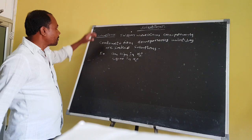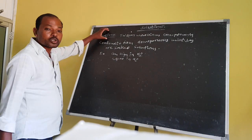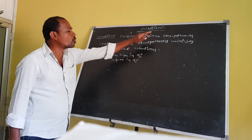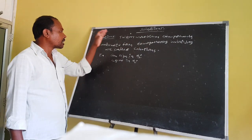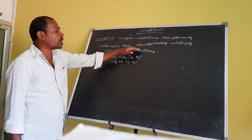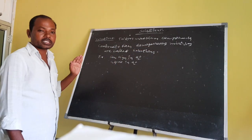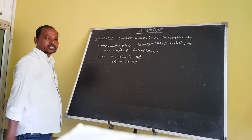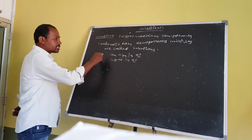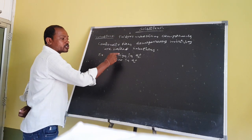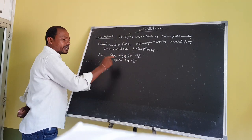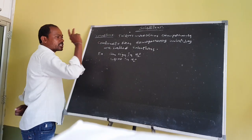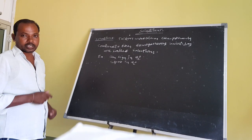Once again, what are solutions? Solutions means two or more than two components combine to form homogeneous features. These type of features are called solutions. Examples: sugar dissolved in water and ethyl alcohol dissolved in water.